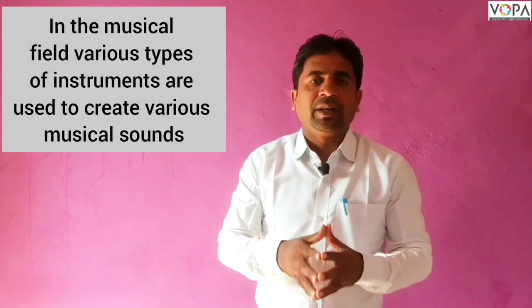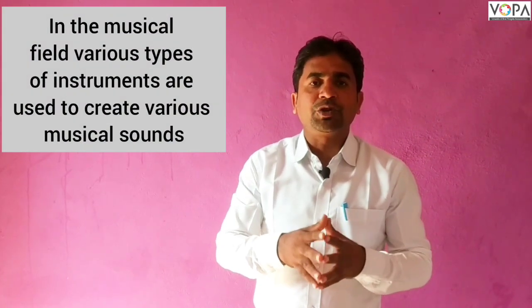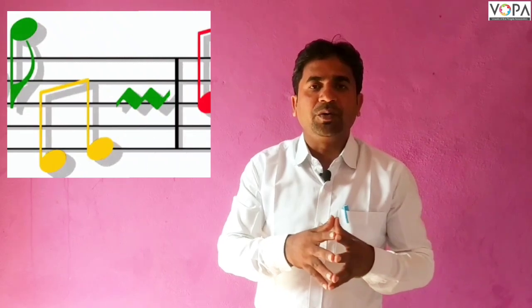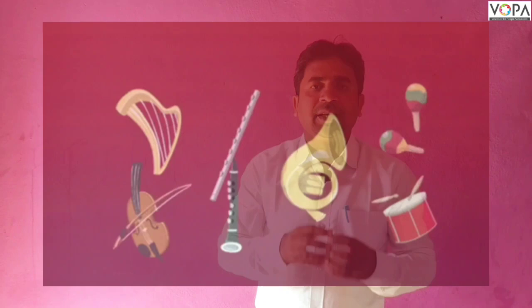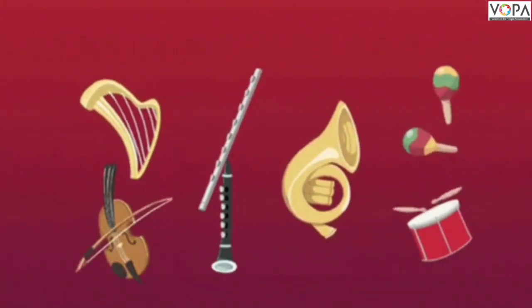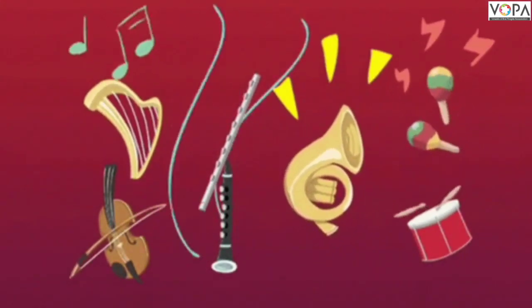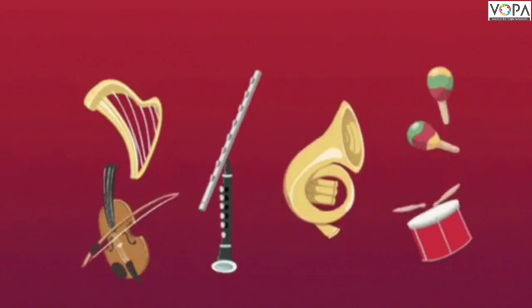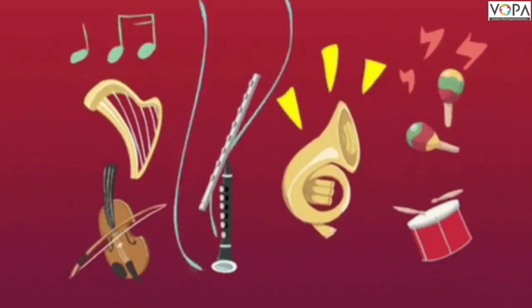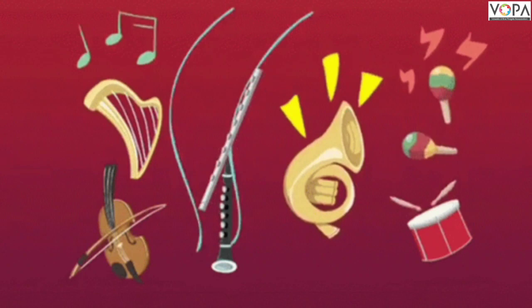In the musical field, various types of instruments are used to create a sound note. In the Sangeet Chetra, many types of instruments are used to create different types of notes. Such as string instruments like a guitar, violin, sitar, etc. And in wind instruments, such as a flute, etc., different sound notes are created.